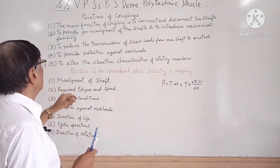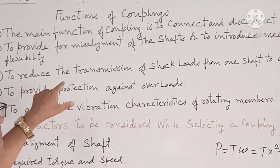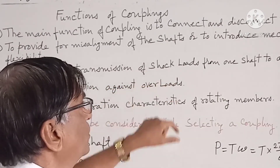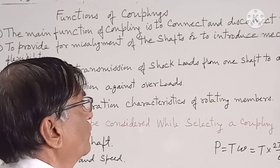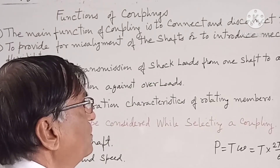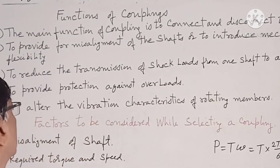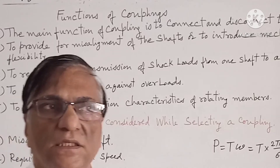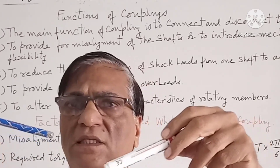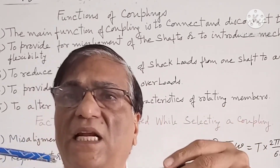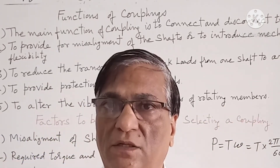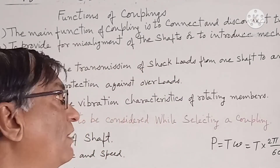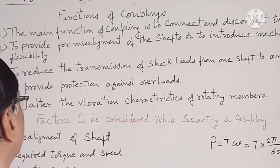Another function is to reduce the transmission of shock loads from one shaft to another. Due to these three types of misalignments, vibrations occur. So in order to reduce the vibration, we use the coupling.